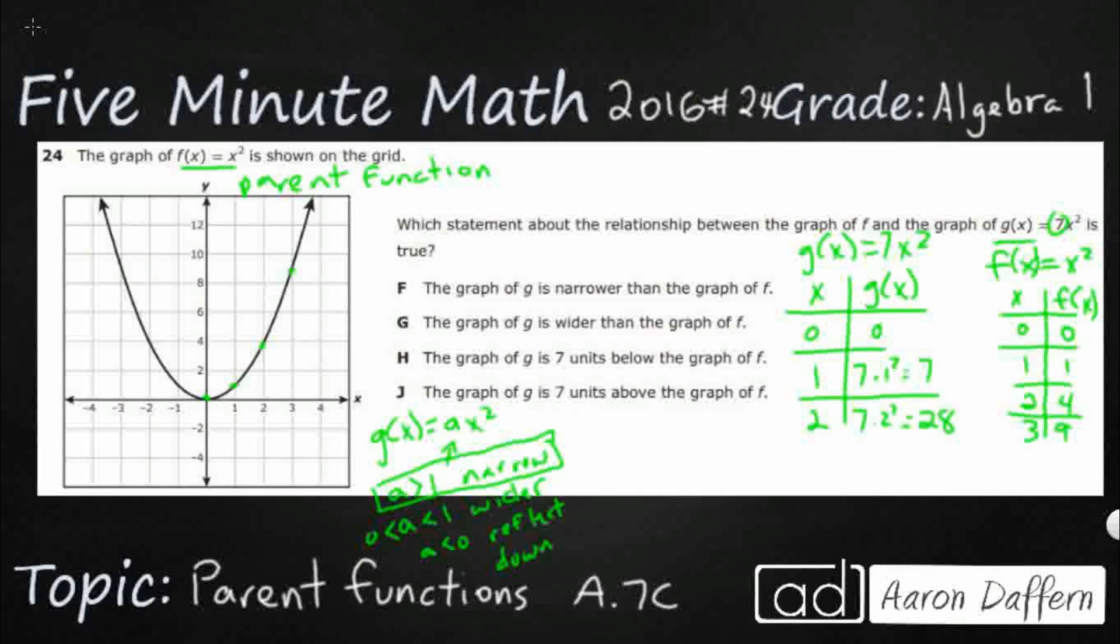So we can plot the first one, 1, 7. And then that negative one would be right there. But then the next one, 2, 28 is probably way up there off the grid. So look how skinny and narrow that's going to be.